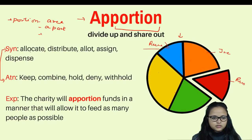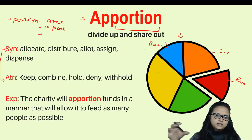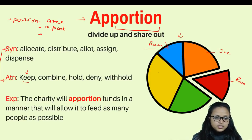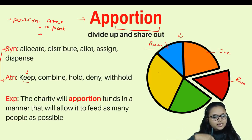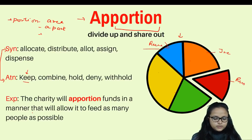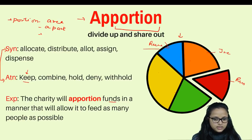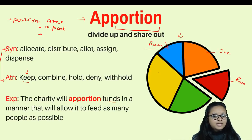Synonyms: allocate, distribute. All these words are similar. The antonym is 'keep' — because apportion means dividing and sharing, but if you don't share you keep it with yourself. Example: 'The charity will apportion funds in a manner that will allow it to feed as many people as possible.' It means the charity will divide and then share its funds for the welfare of as many people as it can.